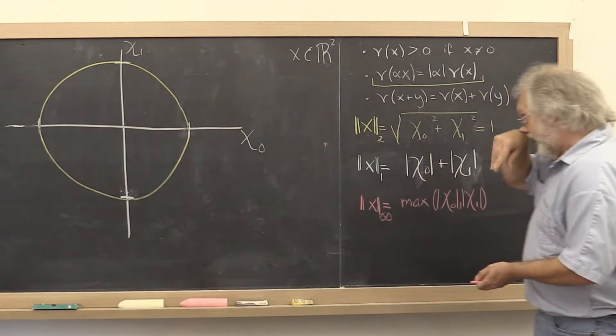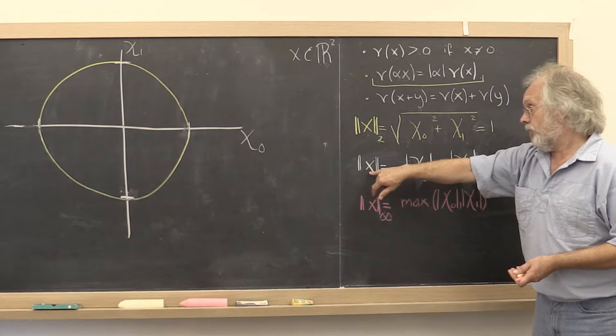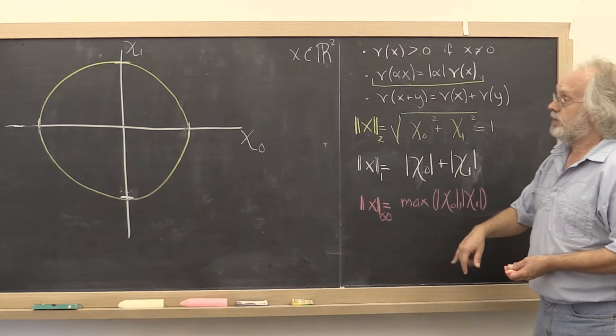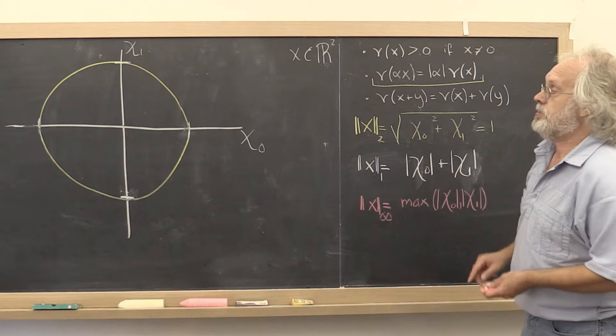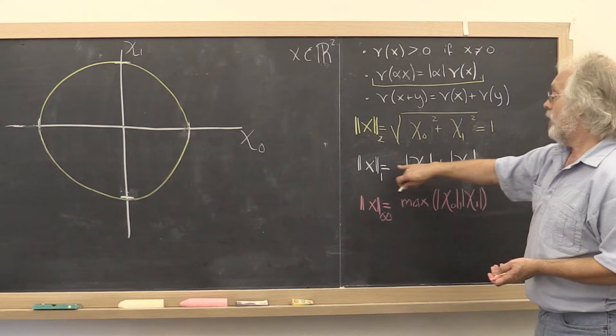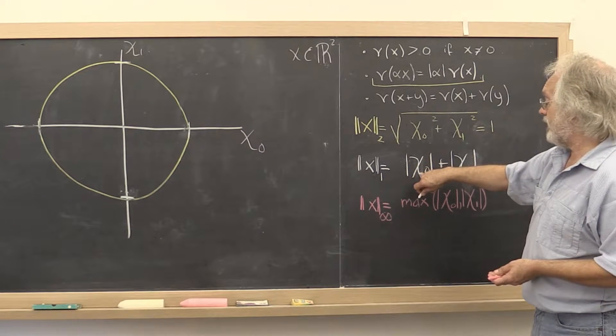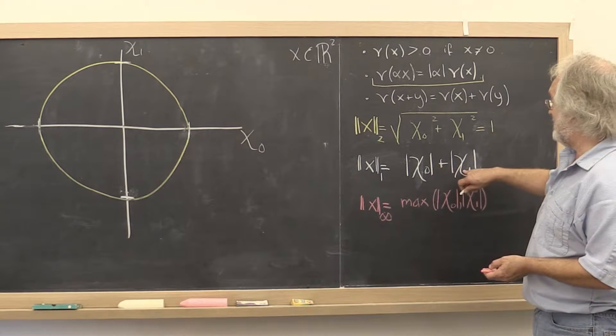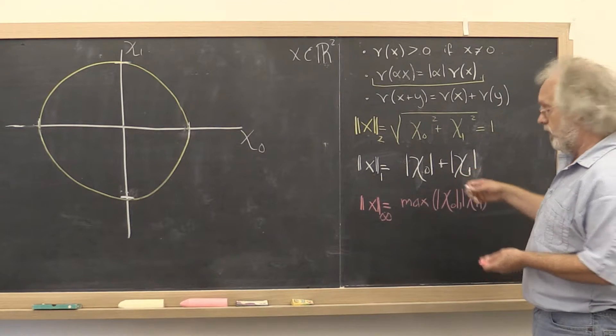Alright, so now let's look at the set of all vectors with 1-norm equal to 1. In other words, all points such that the absolute value of the first coordinate plus the absolute value of the second coordinate is equal to 1.